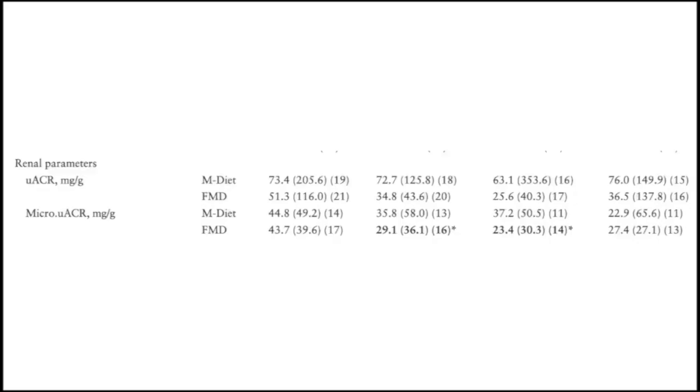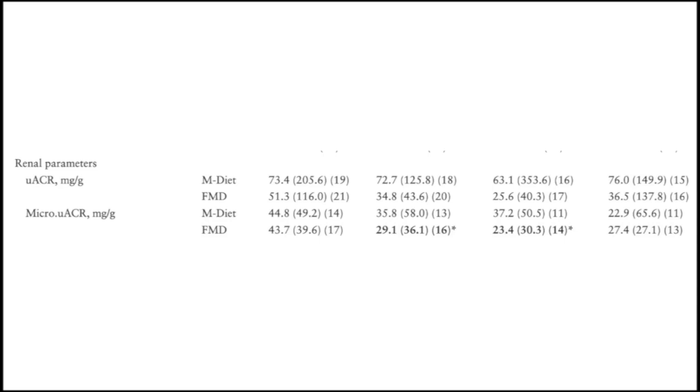Cystatin C, a very sensitive measure of how well the kidneys are working, stayed stable on the fasting-mimicking diet, but in the Mediterranean diet group it slowly got worse — consistent with what we see clinically, where kidney function tends to decline over time. Overall, when looking at the amount of protein in the urine, the overall results were technically negative because the study was relatively small. However, the ACR went from 51 to 25 — almost half. And if you look specifically at the group with the very early stage, microalbuminuria, you see a different story: a 40% drop in ACR from 43 to 23, compared to the Mediterranean diet where there was really no difference, going from 44 to 37.2.